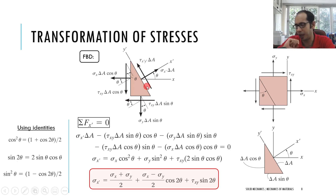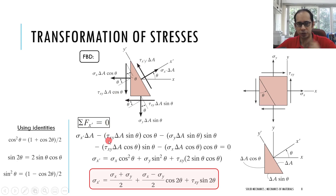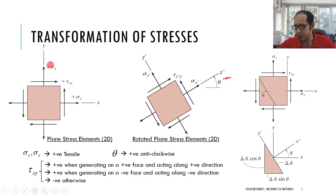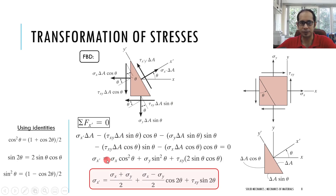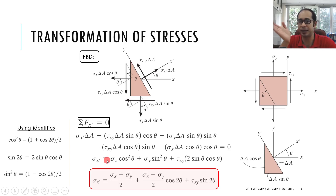The transformed σx' about the rotated axis depends on the original stresses through this relationship. It is easy to remember if you write it out a couple of times: σx' = (σx + σy)/2 + (σx − σy)/2 · cos(2θ) + τxy · sin(2θ), where theta is the anticlockwise angle of rotation. Write it out a few times and it will become ingrained.